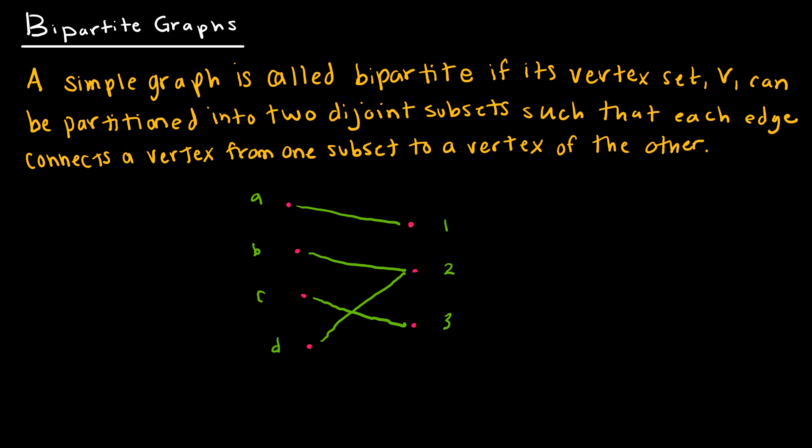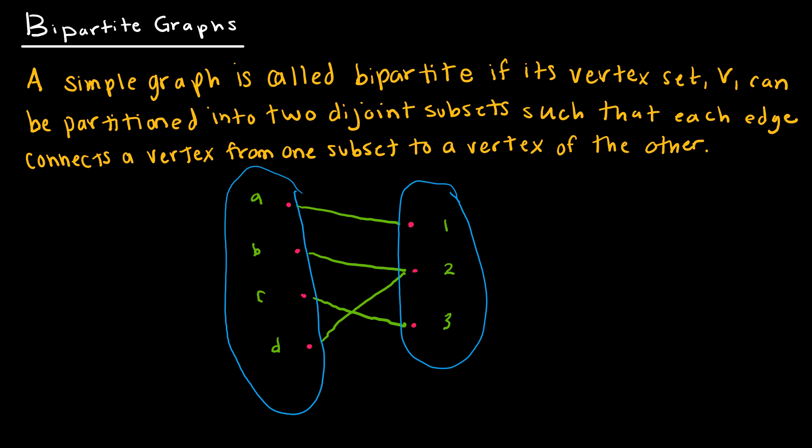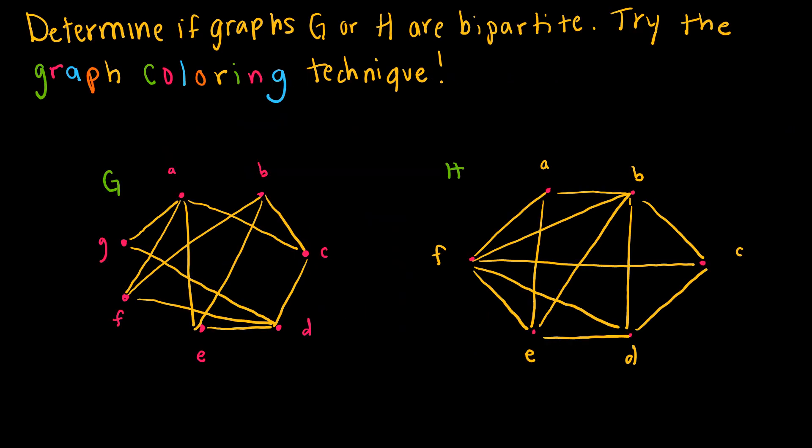Bipartite graphs are used quite a bit, just as hypercubes are used in computer programming and networking. A bipartite graph is a simple graph where we can separate the vertices into two disjoint subsets such that vertices within the same subset are not connected to one another — the only edges go from one subset to the other.